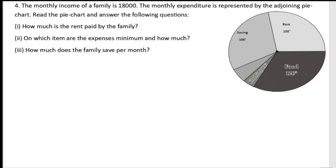The fourth problem: the monthly income of a family is ₹18,000. Income is the money earned or gained by working, like a salary. The monthly expenditure — expenditure means the amount you are spending — is represented by the adjoining pie chart. So in this pie chart, they have shown the monthly expenditure of the family.